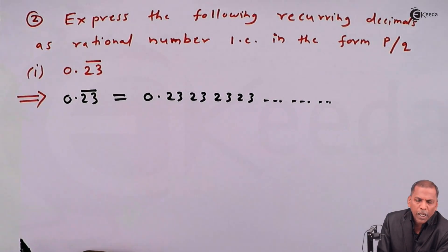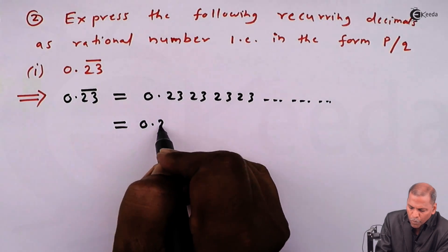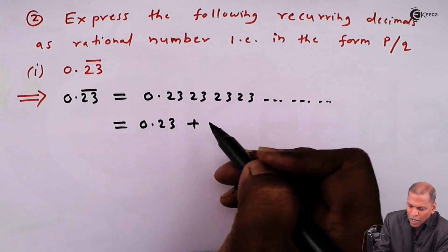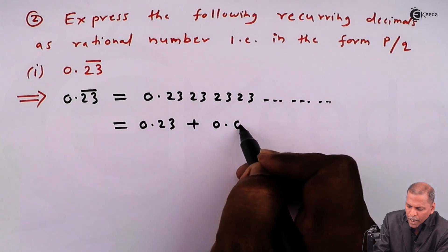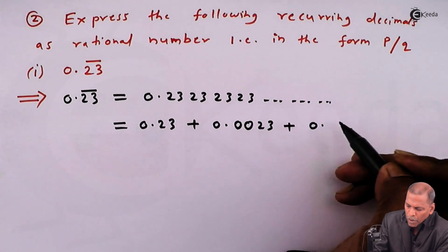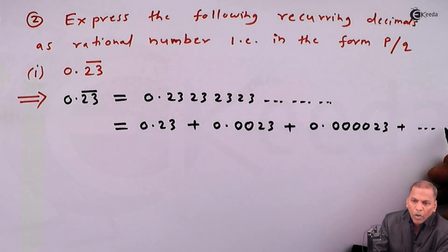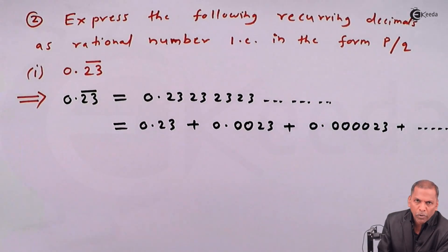It means in this case the number 23 is repeating again and again, that is a recurring number which can be written as 0.23 plus 0.0023 plus 0.000023 and going on. Now, these numbers are in GP.